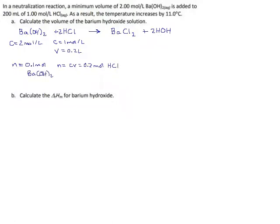And now that we have that, we can get volume. Volume is how many moles you need divided by the concentration of your mixture. So that would be 0.1 divided by 2 mol/L, which equals 0.05 liters, or 50 milliliters. That's the volume of the barium hydroxide solution, and that takes care of Part A.